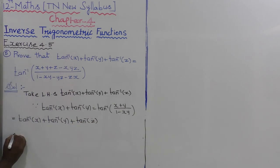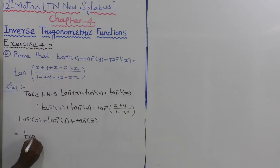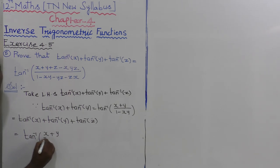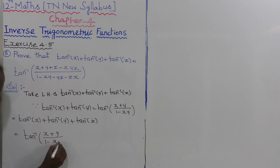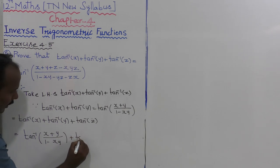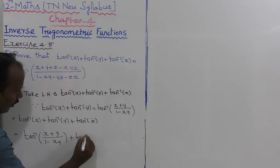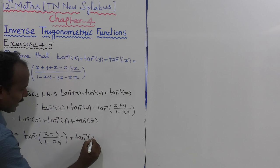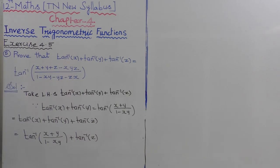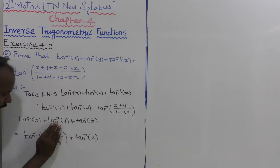Applying the formula to the first two terms gives tan inverse of x plus y, the whole divided by 1 minus xy, plus tan inverse of z. Again using this formula, we consider the full expression together.